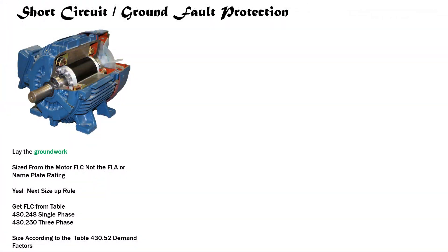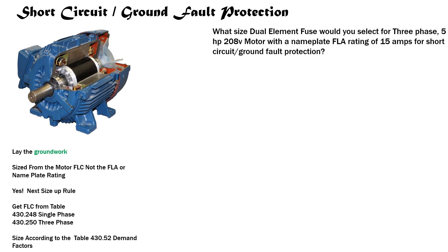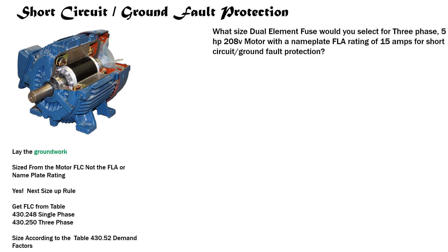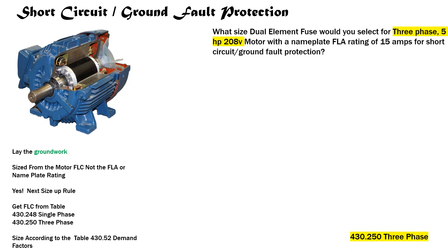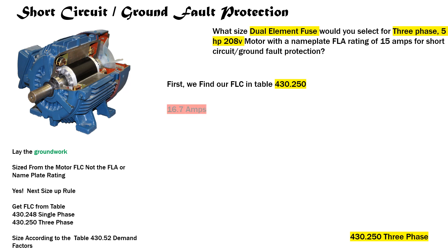This is how we become a master — repetition, repetition, repetition. Let's do it again. What size dual element fuse would you select for a three-phase, five horsepower, 208 volt motor with a nameplate FLA of 15 amps for short circuit and ground fault protection? It's three-phase, five horsepower, 208 volt, and a dual element fuse. We find our FLC in table 430.250 — it's 16.7 amps. Now we find our demand factor in table 430.52, which is 175 percent.